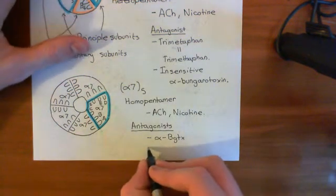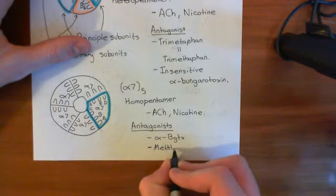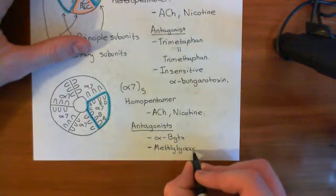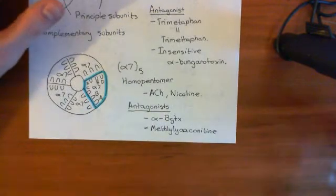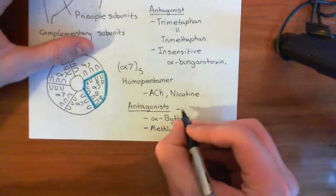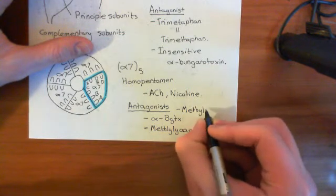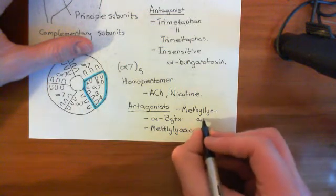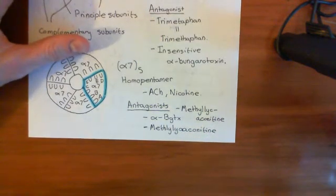And, finally, another antagonist for these receptors is a molecule known as methyl-like-aconitine. Methyl-like-aconitine. I can't pronounce that. So, let me write that again. Because I've made a little smudge there. So, this antagonist, which we'll see again because it's an antagonist for the other brain isoform as well, is known as methyl-like-aconitine. And I did try and Google how to pronounce this, but I couldn't find out. Methyl-like-aconitine, I think, is how you would pronounce that.